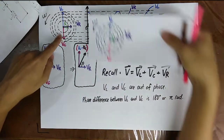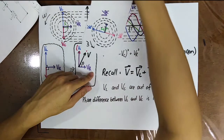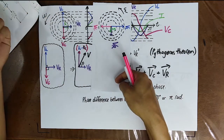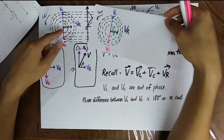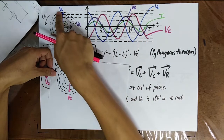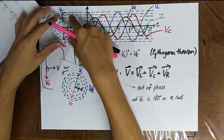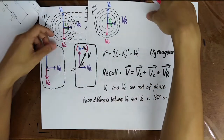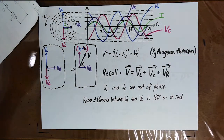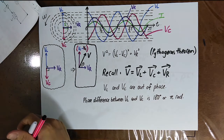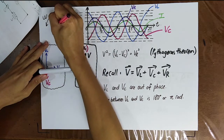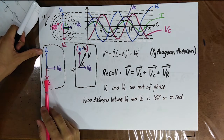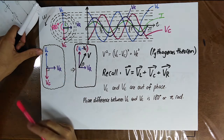Draw a phasor diagram where VL leads VR by 90 degrees, VR leads VC by 90 degrees, and VR and I are in phase. Any orientation is correct, but normally we use VR along the positive direction. Notice that VL and VC are 180 degrees out of phase, so you can combine them as VL minus VC.